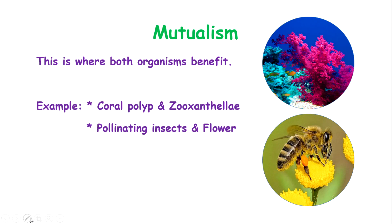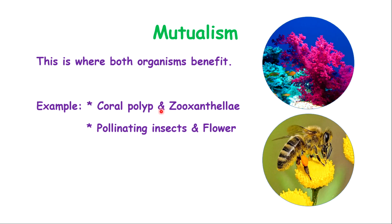We have two examples to look at. The first is a coral polyp and a zooxanthellae. Coral polyps are animals, while zooxanthellae are algae, which are plant-like. Algae behave just like plants — they photosynthesize and make their own food, so they are autotrophs. Keep that in mind as I explain this relationship.